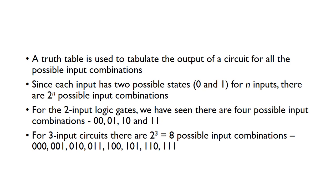A truth table is used to tabulate the input of a circuit for all the possible input combinations. Since each input has two possible states — it can be a 0 or a 1 — for n inputs there are 2 to the power n possible input combinations. So for the two-input logic gates we've seen already, 2 to the power 2 gives us 4 possible input combinations.